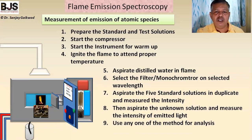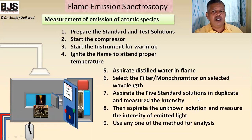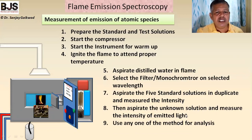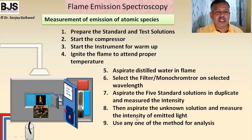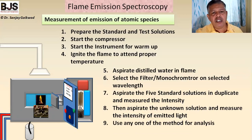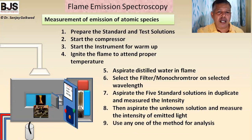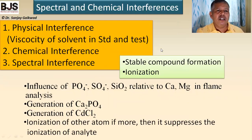Then aspirate five standard solutions in duplicate or multiple replicates, allowing each to aspirate into the flame and measuring the intensity of emitted radiation. By using a calibration method, standard addition method, or graphical method, one can easily find out the concentration of the metal ion in the unknown solution.